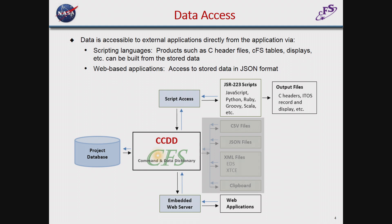I'm going to talk about data access. The application stands in between the Postgres database and the outside world. There are a couple of ways of getting the data out and utilizing it. The main method is via script access. The application allows scripts to be executed from the application itself. The scripts can use predefined Java functions that they can call to get the data and then use it to construct output products, like C header files, ITOS record files, display files, or CFS tables — anything that needs command and telemetry data. The script then creates the files for you, so it can be fairly well automated.